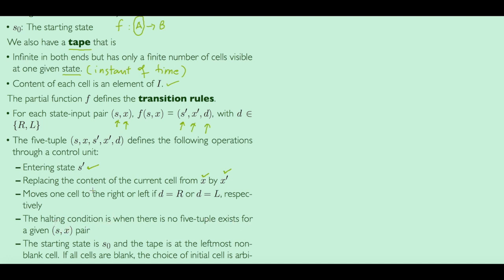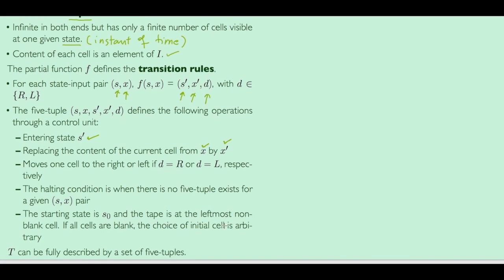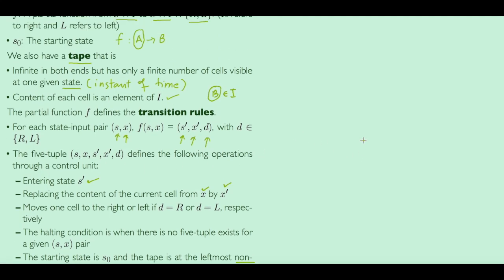The halting condition is when no five-tuple exists for a given (S, X) pair — if we reach that configuration with no defined transition, that is where we stop. The starting state is S0 and the starting position on the tape is the leftmost non-blank cell, meaning not equal to B. If all cells are blank, the choice of initial cell is arbitrary. A set of five-tuples also defines a Turing machine completely.